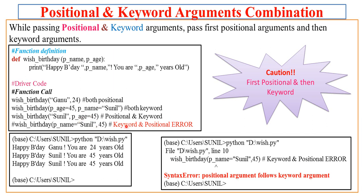If you remove the comments on the fourth call — where keyword argument comes before positional — and execute the program, you get a syntax error: 'positional argument follows keyword argument.' So Python enforces: first positional, then keyword — never the other way around.